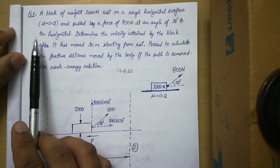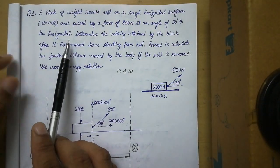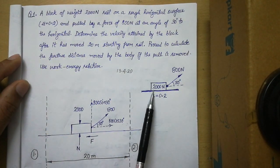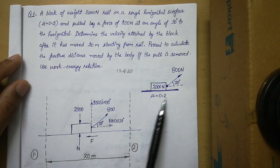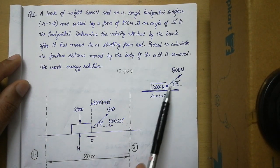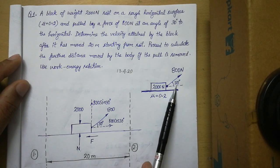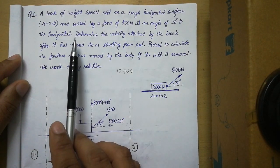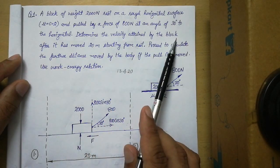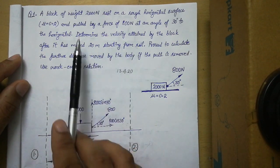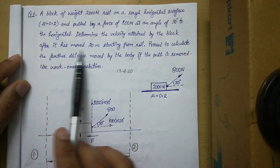The force of 800 Newton acts at an angle of 30 degrees to the horizontal. As shown in the diagram, there is a block of weight 2000 Newton resting on a surface where the friction coefficient is 0.2, and a pull of 800 Newton acts towards the right at an angle of 30 degrees to the horizontal. We need to determine the velocity attained by the block after it has moved 20 meters starting from rest.